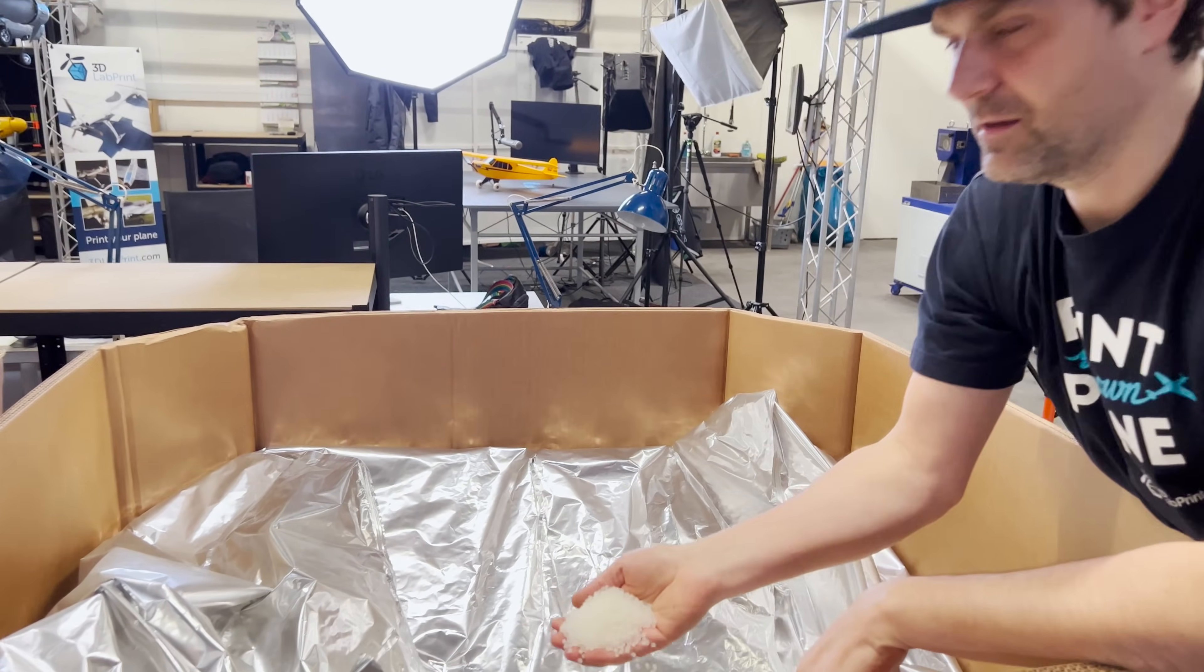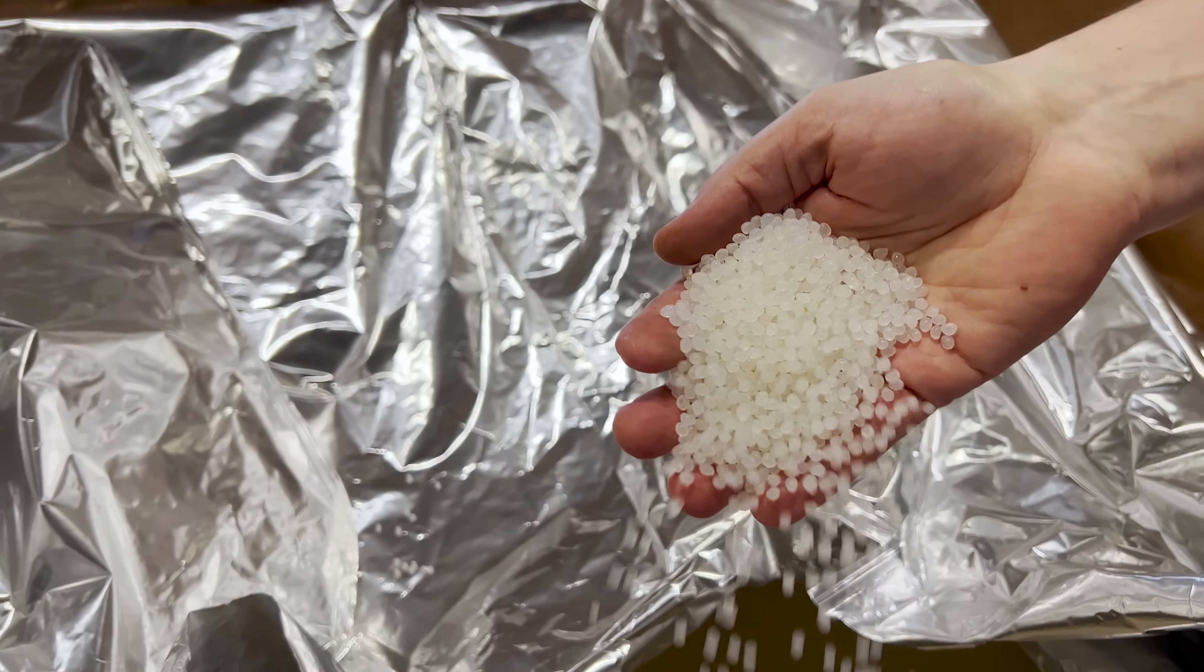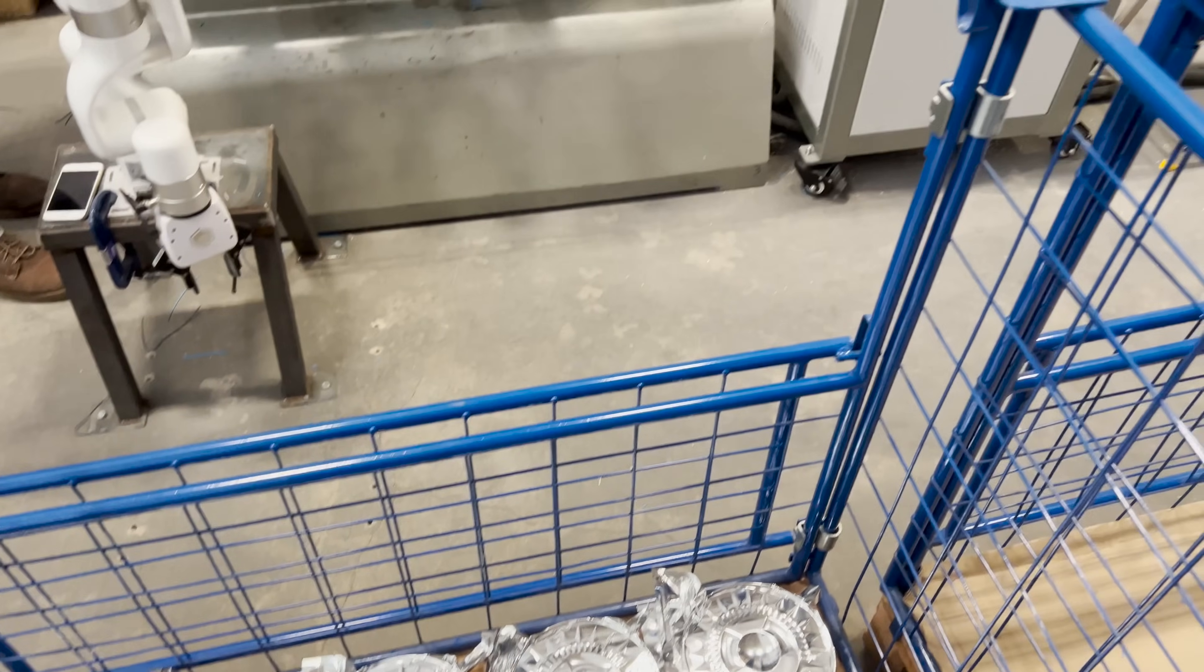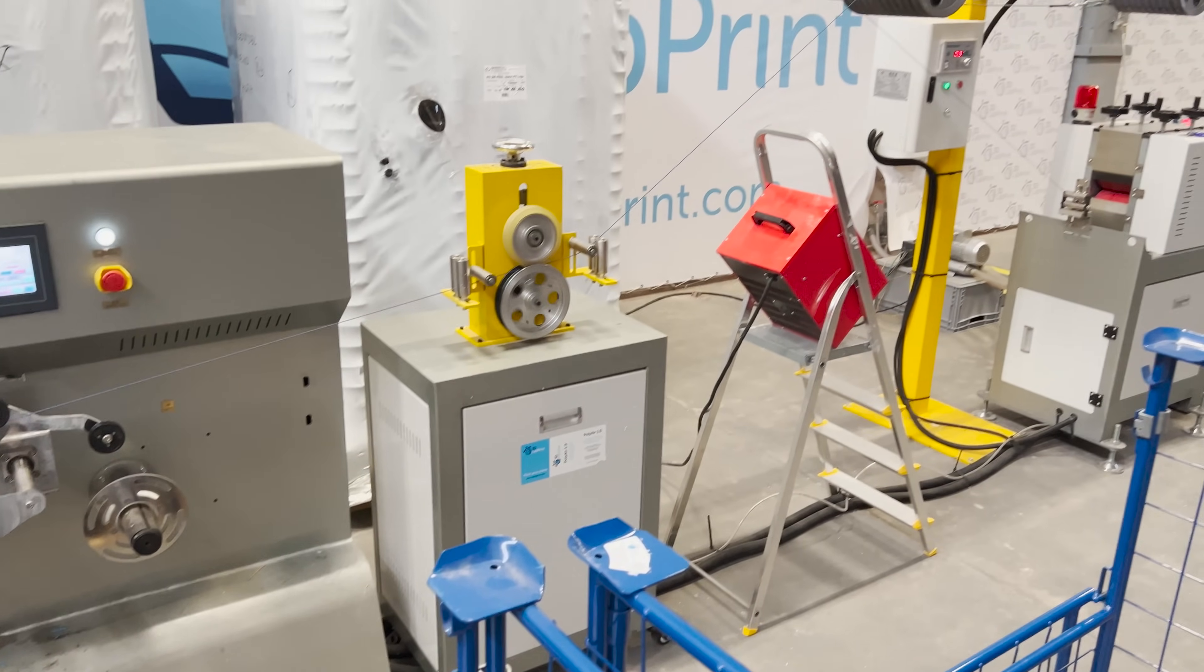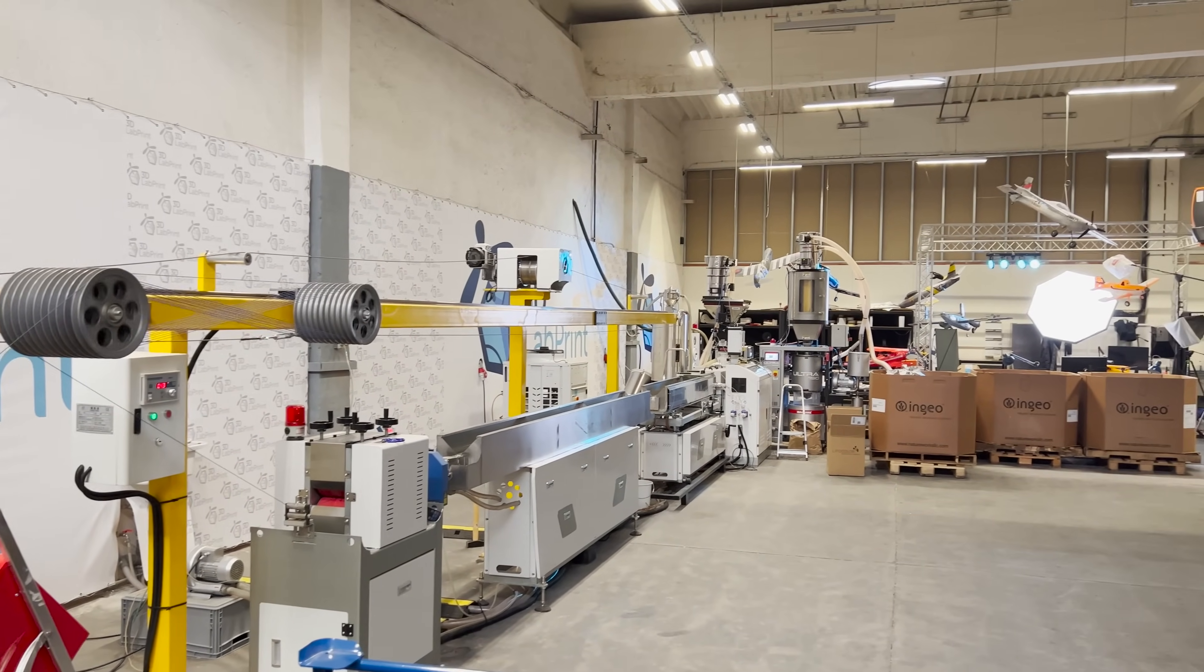PLA is an excellent material for printing aircraft. It's less prone to shrinkage when it cools, so you can print large parts with just a single perimeter and it holds its shape and doesn't warp. On the other hand, PLA is quite heavy and brittle. Its density is 1200 kg per cubic meter, or 75 pounds per cubic foot.